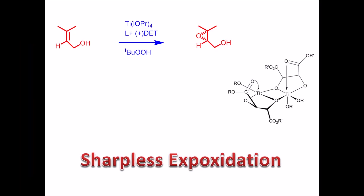Since the title suggests it's a crash course, I'm going to be a little fast — you can watch it in slow motion. In Sharpless epoxidation, it is basically an epoxidation reaction of functionalized alkenes. By functionalized alkenes, I mean those alkenes which have some kind of functionality attached, like an allylic hydroxy group attached to the alkene.